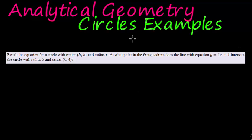Hi and welcome to another example video of circles in analytical geometry. Recall the equation for a circle with center (h, k) and radius r. In other words, we have (x - h)² plus (y - k)² equals r².